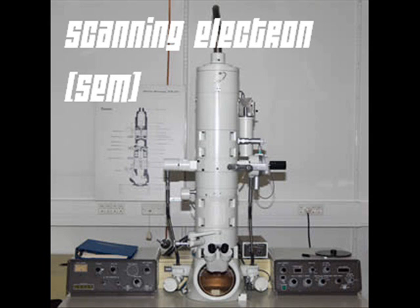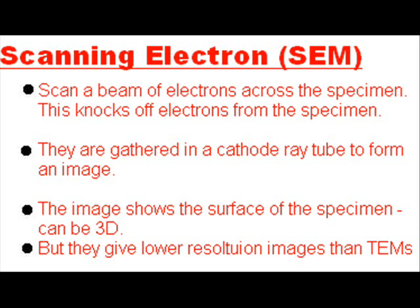The scanning electron microscope scans a beam of electrons across the specimen. This knocks off electrons from the specimen, which are gathered in a cathode ray tube to form an image. The images produced show the surface of the specimen and can be 3D, but they give lower resolution images than TEMs.